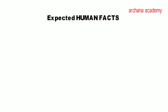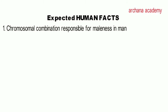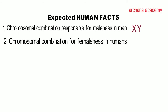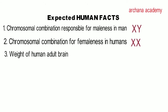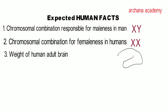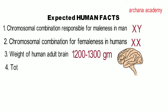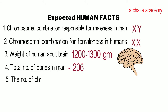Hello friends, this video is related to expected human biology facts that are important for many competitive exams. The chromosomal combination responsible for maleness in man is XY and for femaleness it is XX. The weight of the human adult brain is 1200 to 1300 grams. The total number of bones in an adult man is 206.